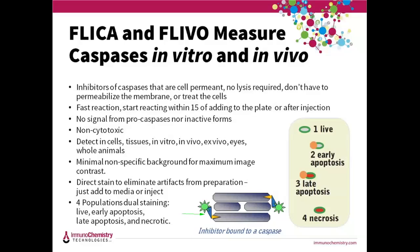These are non-cytotoxic with minimal background staining and will remain inside the cell for detection as long as the cell membrane is intact. They can be detected at many wavelengths like red, green, near infrared, and at 660. So you can detect them with a microscope, plate reader, flow cytometer, an animal imager, scanning laser ophthalmoscope, and other imagers. And they're compatible with other stains like GFP, DAPI, and Hoechst.